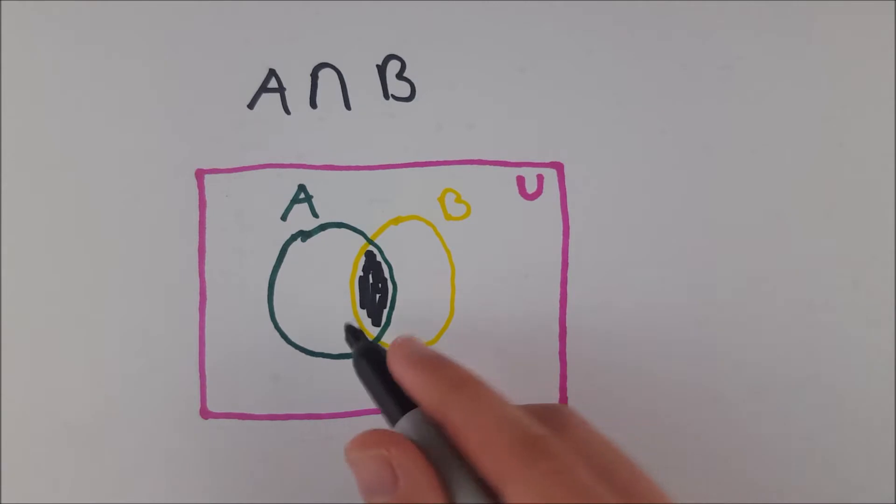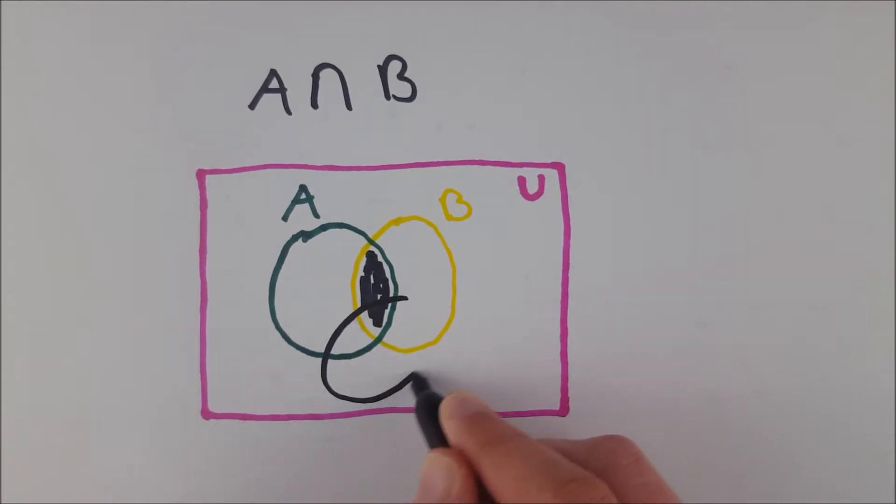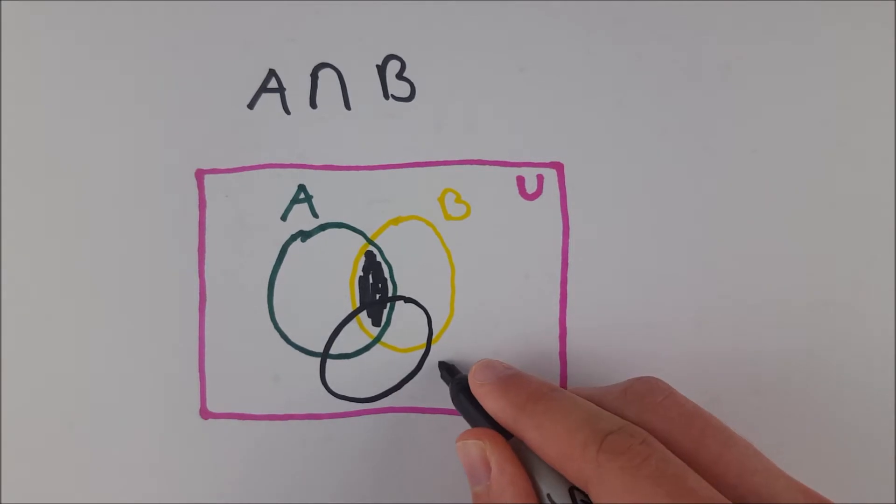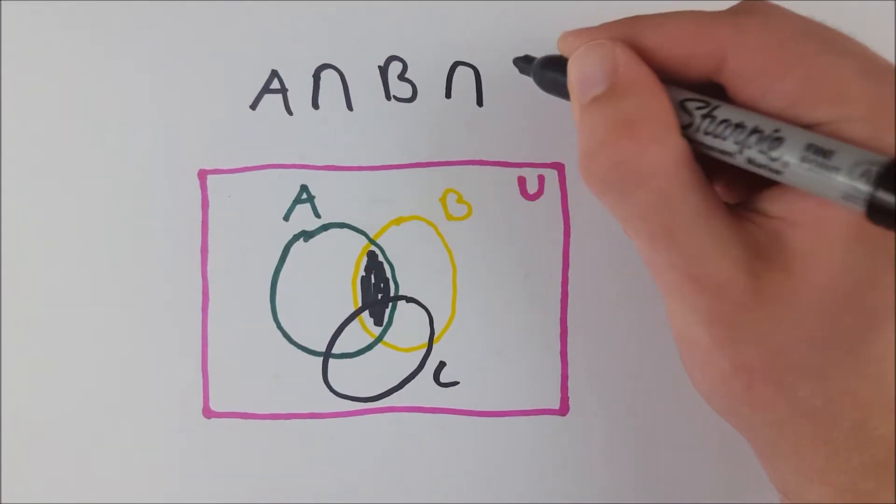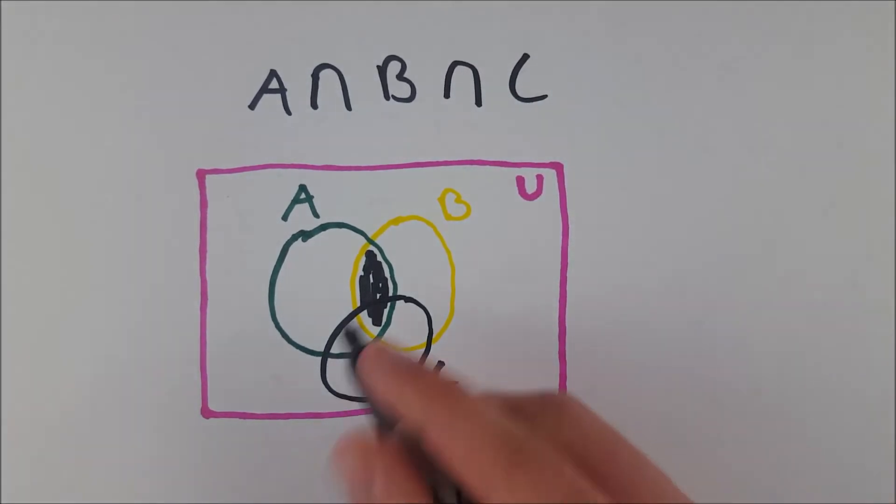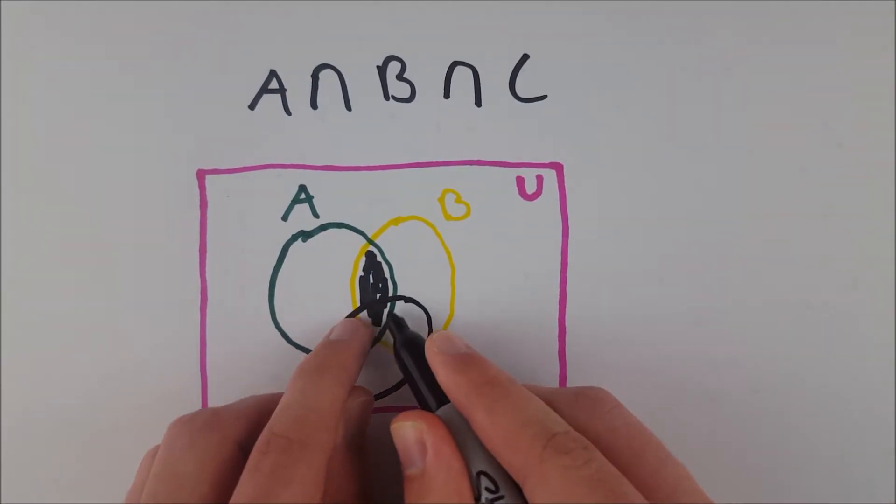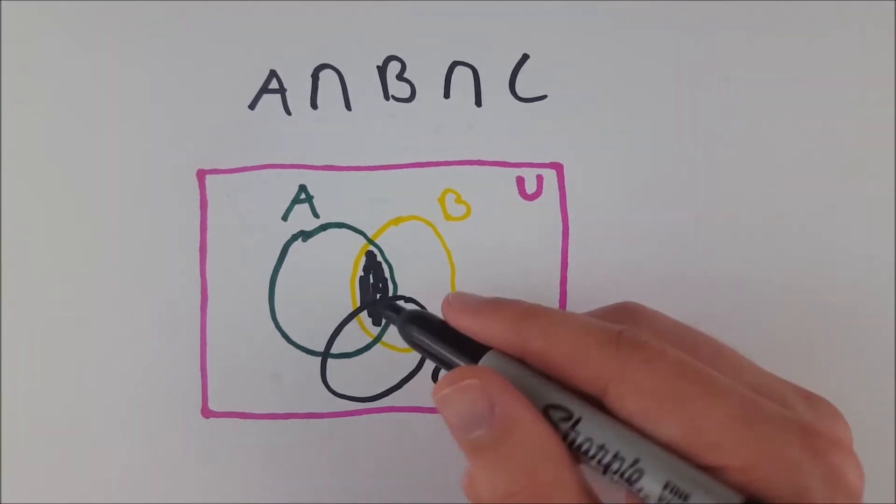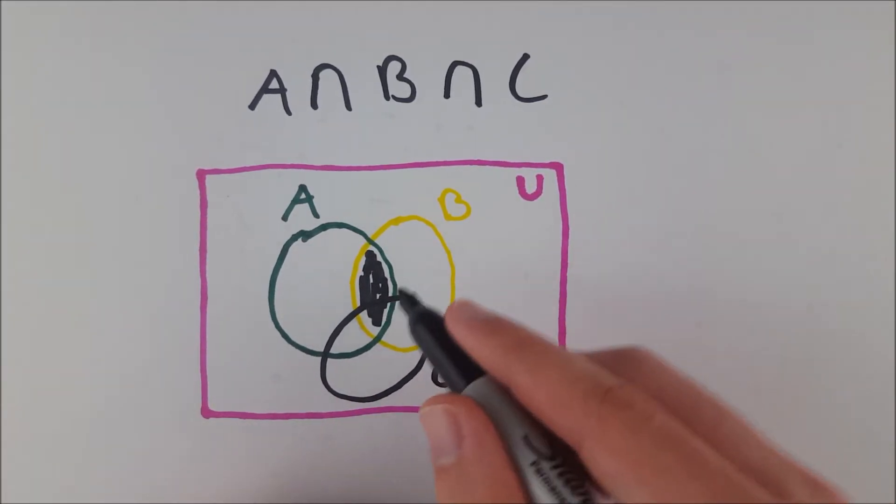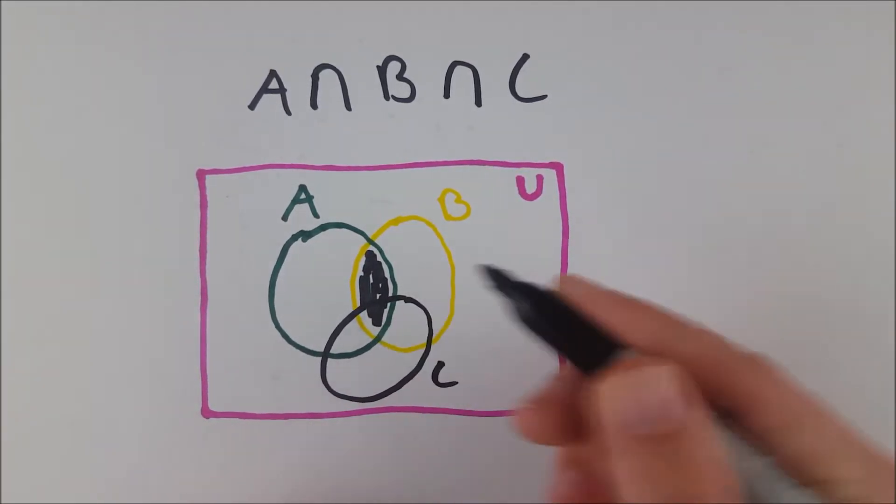And if we intersected another set here, let's say we had set C here, and we wanted A intersect B intersect C, we would be looking at this small little sort of hyperbolic triangle shape, or excuse me, that's kind of a spherical triangle shape right there, which might not mean anything to you. But if it does, I hope it helps.